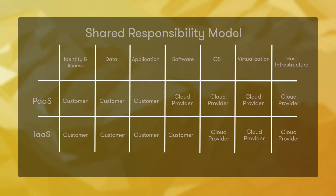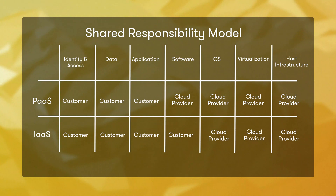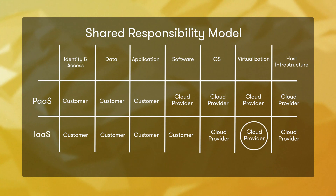The shared responsibility model outlines who is responsible for managing different aspects of services deployed in the cloud. For example, an organization doesn't have to worry about physical servers and virtualization software when deploying IaaS servers in Azure. However, OS patching and software updates is still part of ongoing management. This is important to understand when talking about compute with cloud services because in most circumstances, compute is an IaaS service and much of the management responsibility falls on the customer.